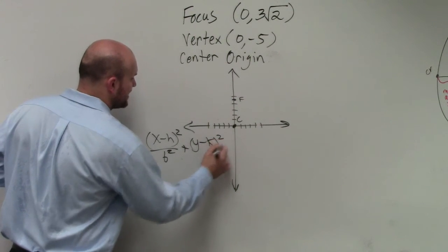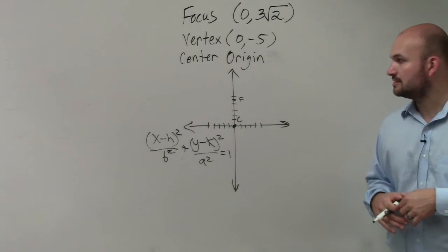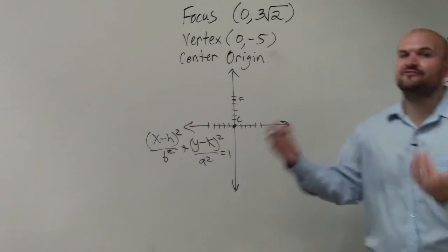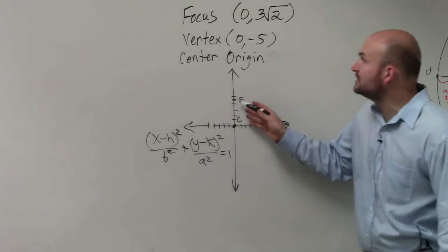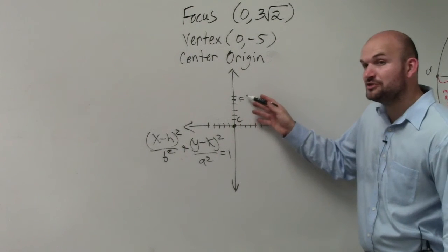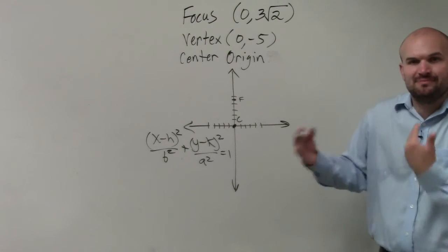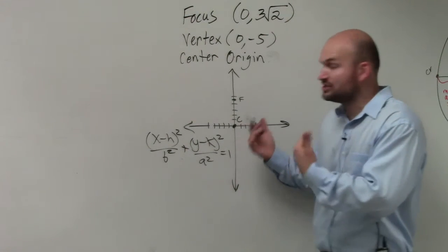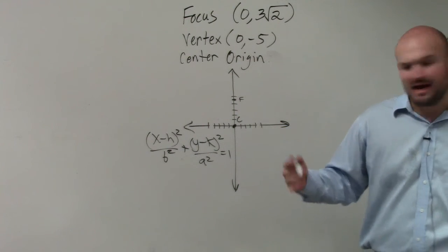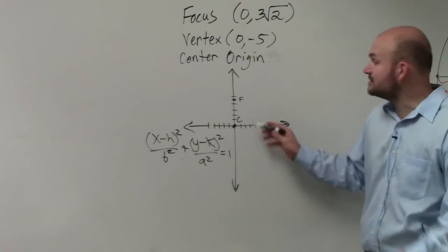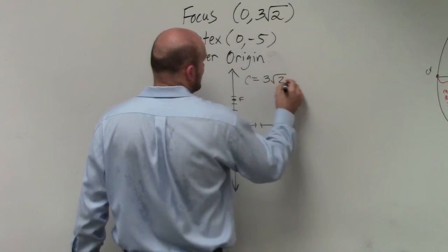Because remember, a squared is always under the y when you have a vertical major axis, right? Now, you don't need to figure out what the other foci is, or focus is. But it's pretty easy. If I'm going up 3 times the square root of 2 to get one focus, all I need to do is go down to find the other one. But you don't even need to. All we need to do is figure out what a, b, and c is, or just a and b. Well, the distance from here to here is c. So I don't need to find the other point. I just need to know what the one point, what the value is. From the center to your foci is c. So c is equal to 3 square root of 2.